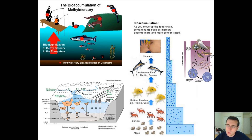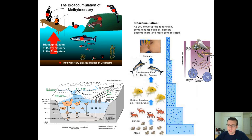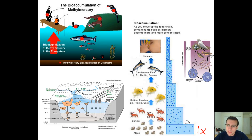When humans pollute the ecosystem, the amounts of those pollutants will spread throughout the food web. The algae will absorb some pollutants directly from the water. Let's say the algae absorbs one unit of toxins. Then the shrimp will eat maybe 10 algae, and if each of those 10 algae had one pollutant inside of it, that shrimp is going to have 10 pollutants inside of them.